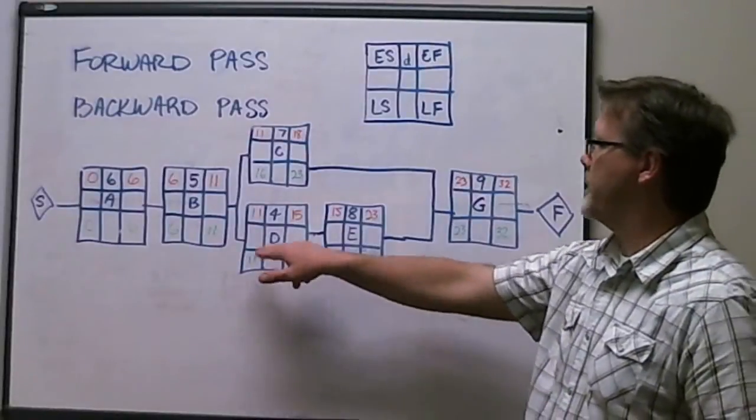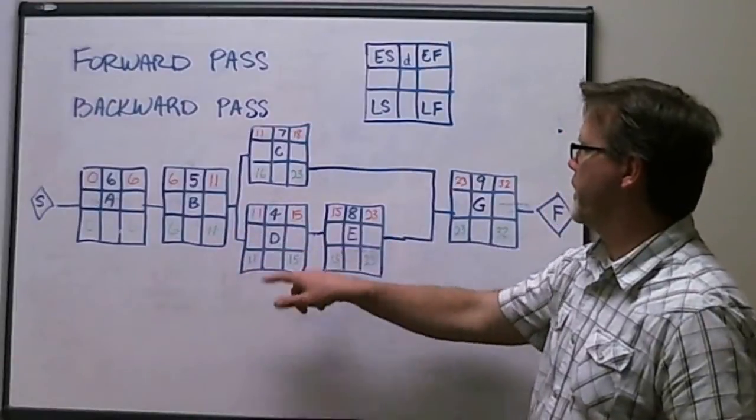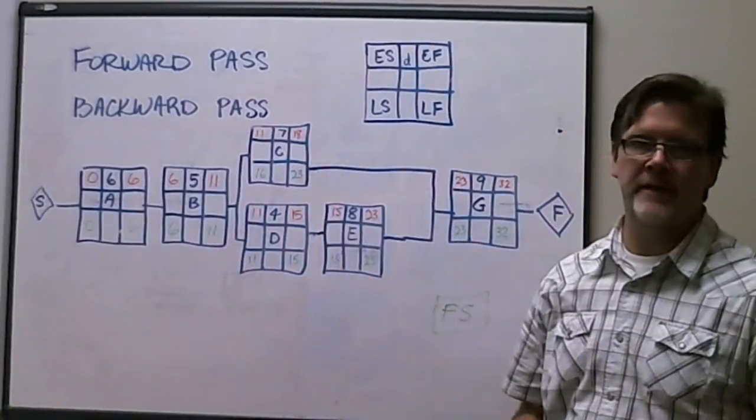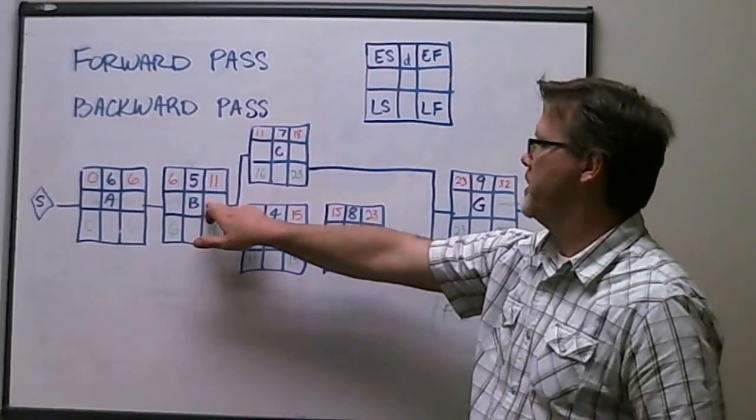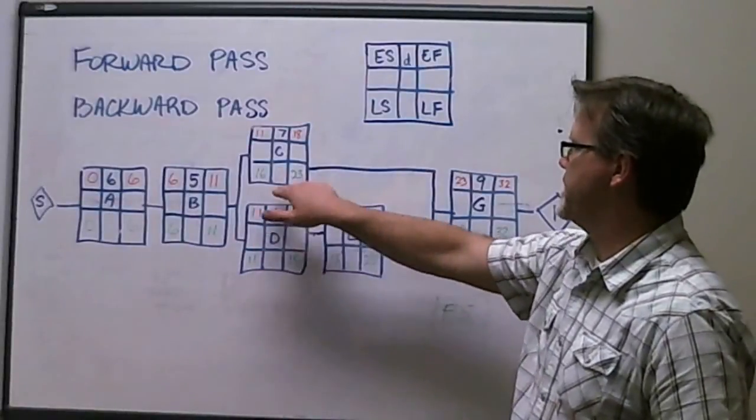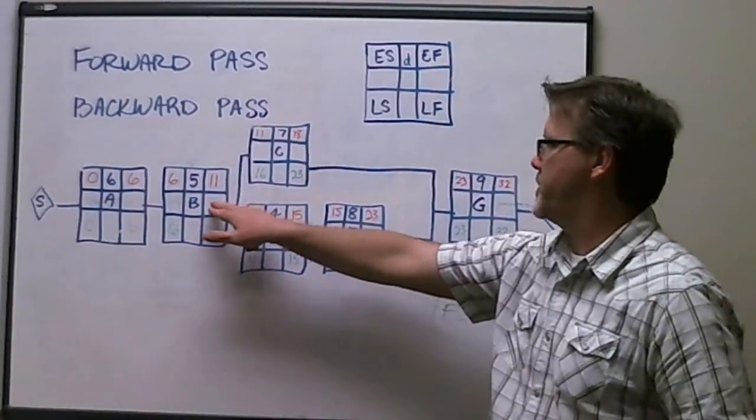As we continue, now we see that upon the completion of activity B, there are two activities, activity C and activity D, that may begin. And so as a result of the early finish of activity B, we see then that activity D and C can both start now on day 11, which of course is that early finish of activity B.